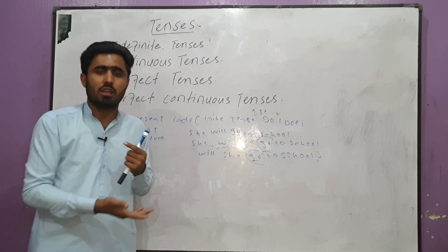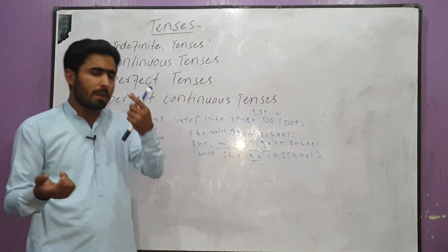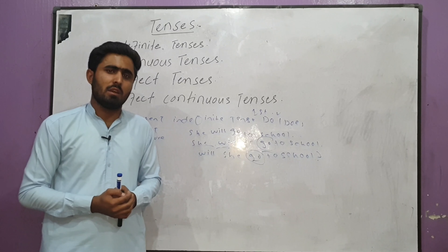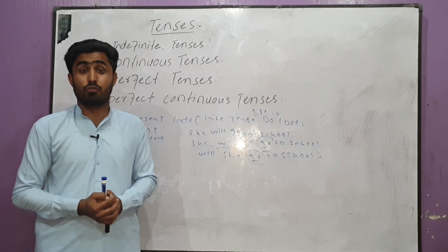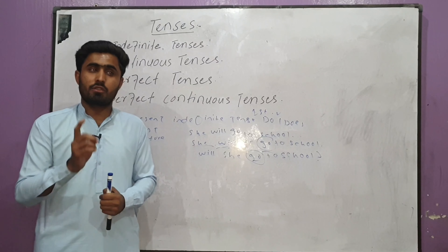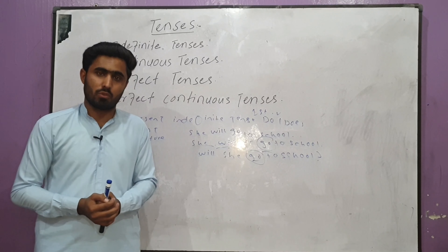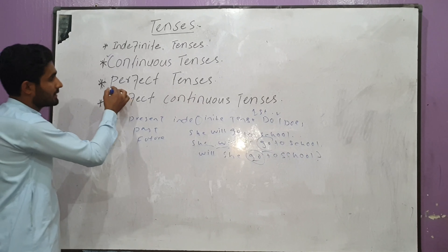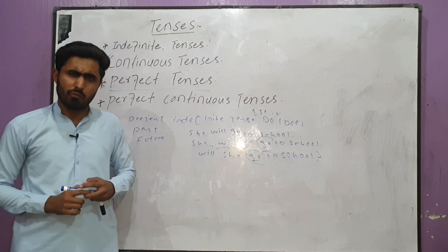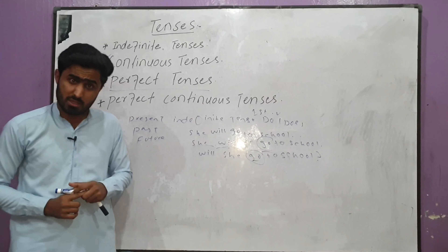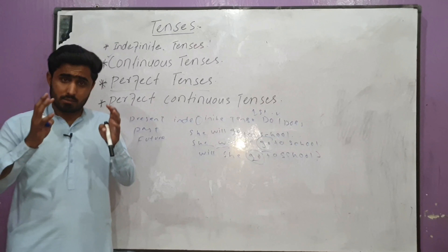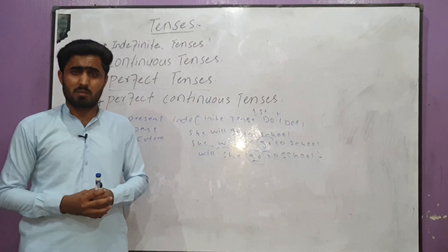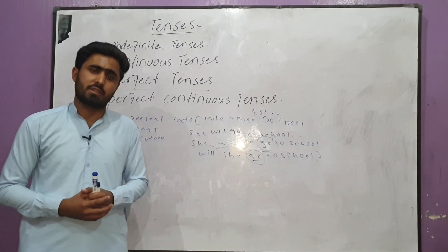Future continuous tense uses 'will be' or 'shall be' for actions which will be going on in the future, which will be progressive in the future. Next, the perfect tenses — these are tenses in which we talk about any action being perfectly complete. In any sentence where the third form of the verb is used, we call them perfect tenses.